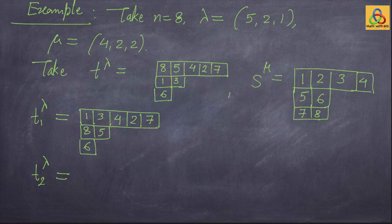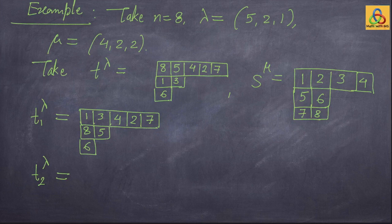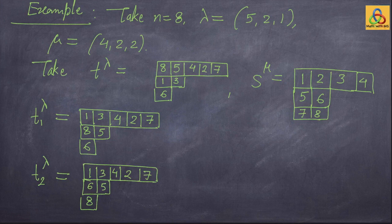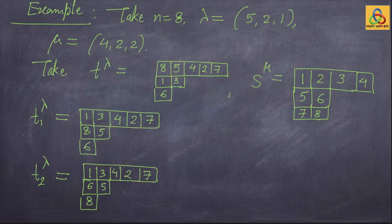Now we obtain T²_λ from T¹_λ by looking at the second row of S_μ. Entry 5 is already in the second row of T¹_λ, so we do nothing. Entry 6 is in the third row of T¹_λ, so we interchange 6 and 8, giving T²_λ. T²_λ differs from T¹_λ only by a permutation of a column, and it has the desired property. Thus T²_λ is the desired λ-tableau U_λ.